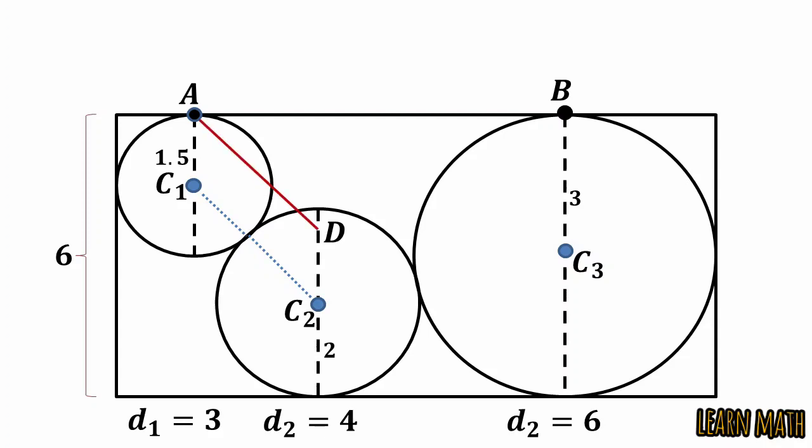Now extend D to E perpendicular on AB, and this will be 6 minus 1.5 minus 2, that is 2.5. Now this is a right angle triangle, so if we solve this right angle triangle we get AE is equal to square root of AD squared minus DE squared, which equals square root of 6.